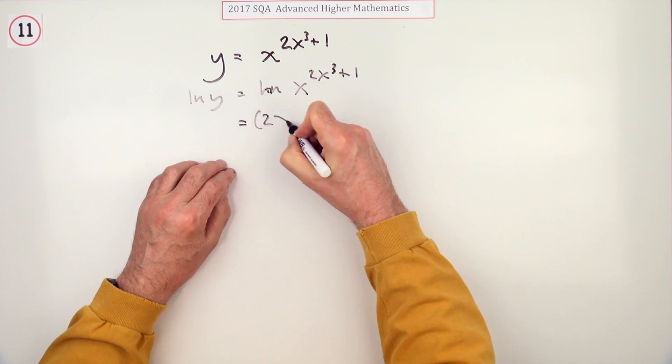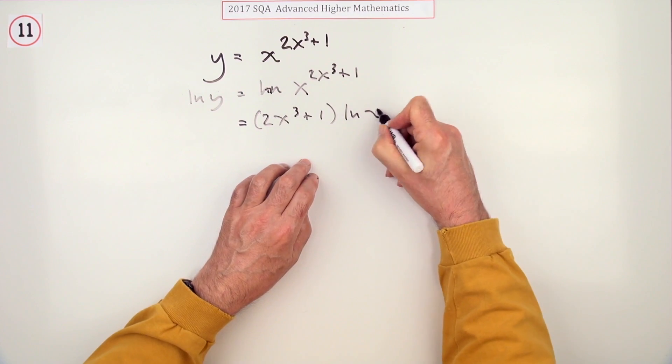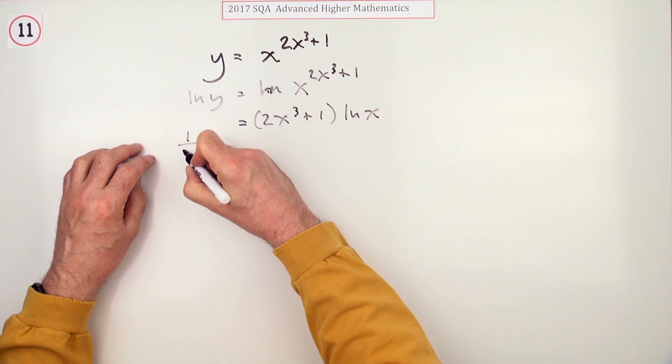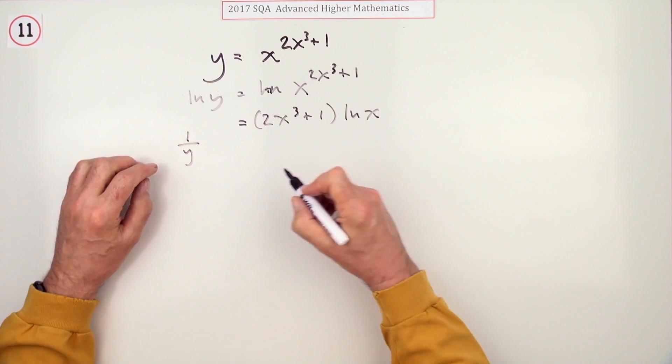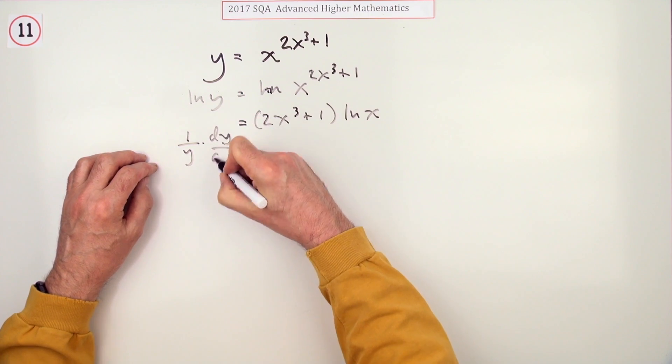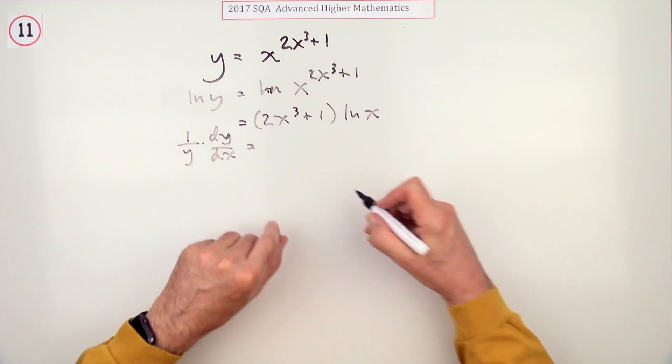So out it comes to the front where you can get at it. So it's that times ln of x. Now you can differentiate both sides. So log just goes to 1 over the function it's acting on times the derivative of that function, so times dy by dx. And this is a product, so this part first.